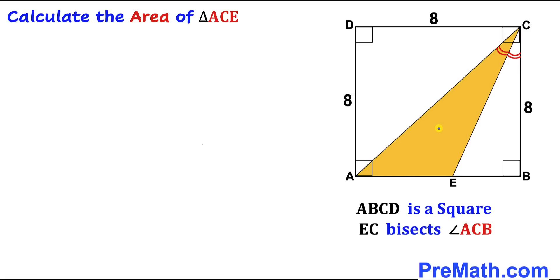Welcome to pre-math. In this video we have a brown shaded triangle ACE inside square ABCD, such that line segment CE bisects angle ACB into two equal parts. We are going to calculate the area of this brown shaded triangle ACE.